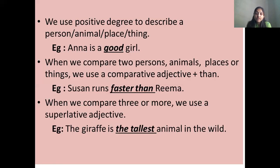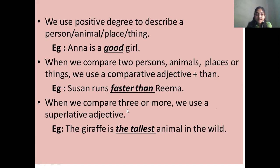When we compare two persons, animals, places, or things, we use the comparative degree. You will usually see the word 'than' in comparative degree sentences. For example: 'Susan runs faster than Rima.' The comparison is happening between Susan and Rima, so I use 'faster than.'